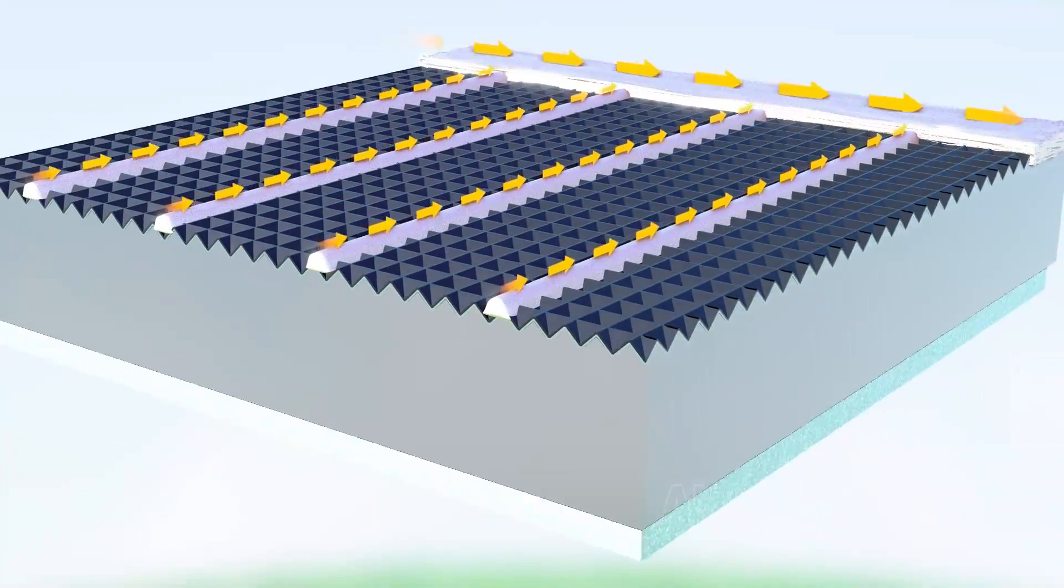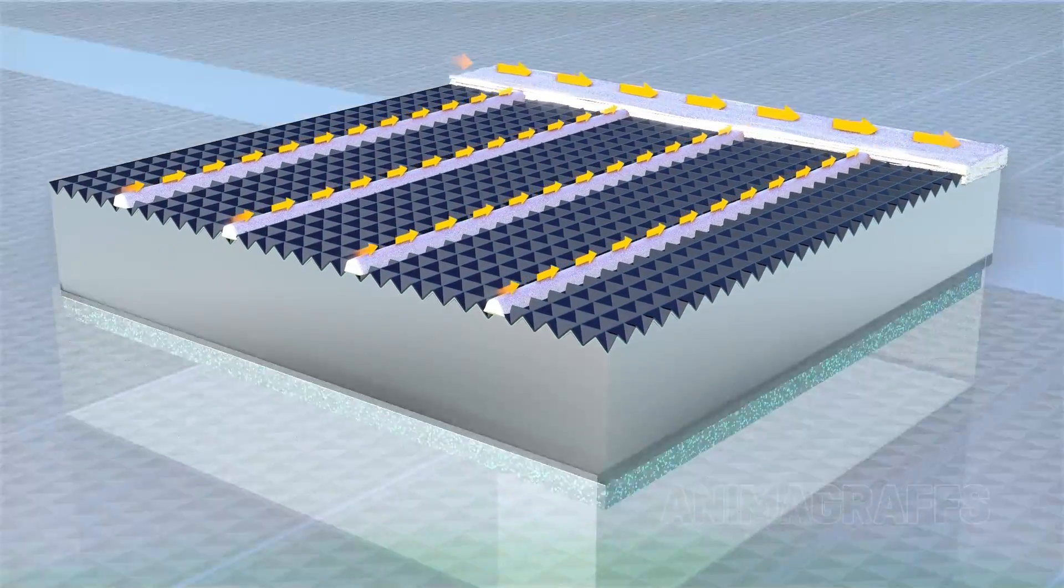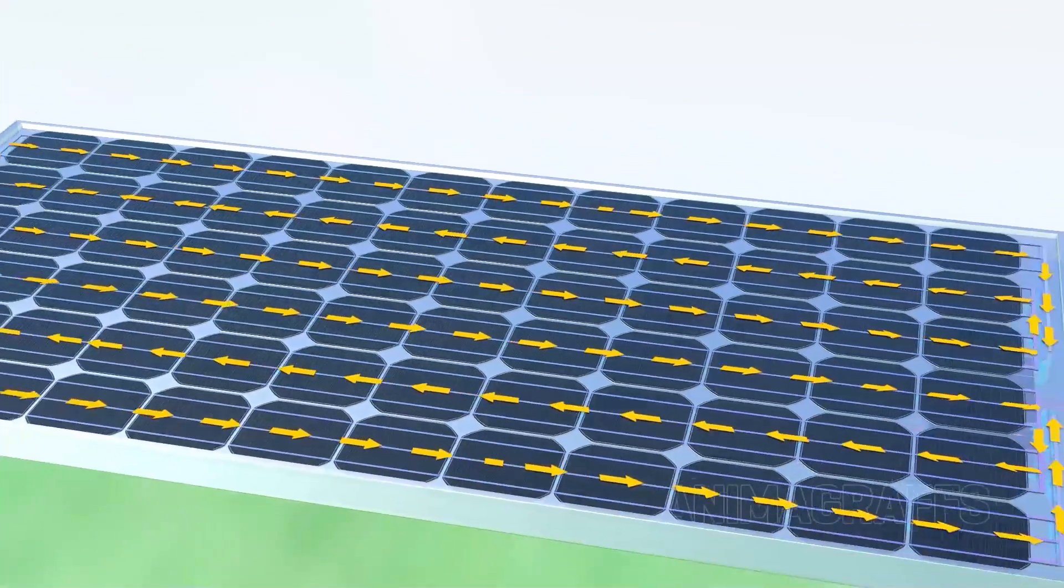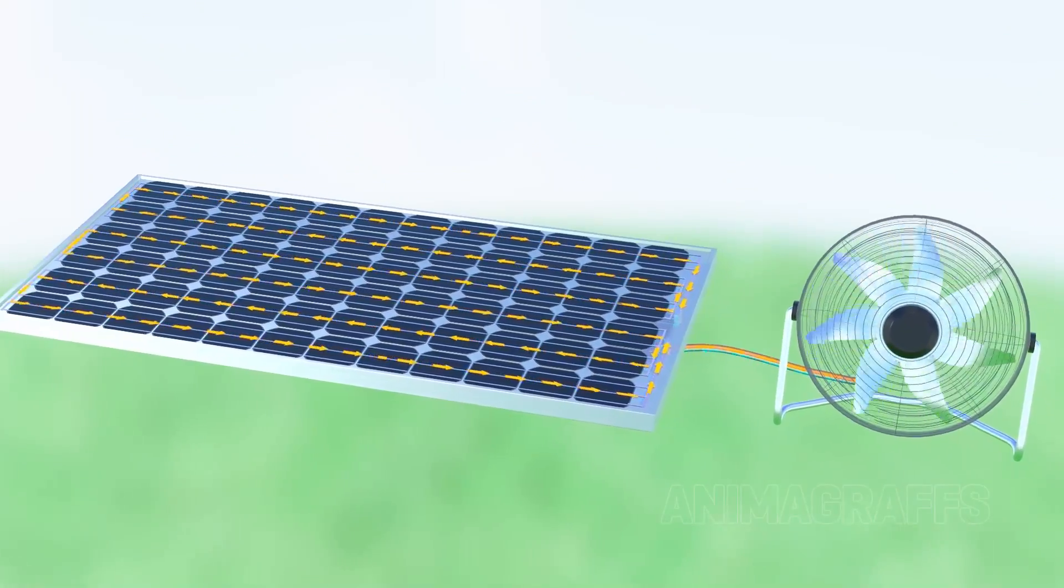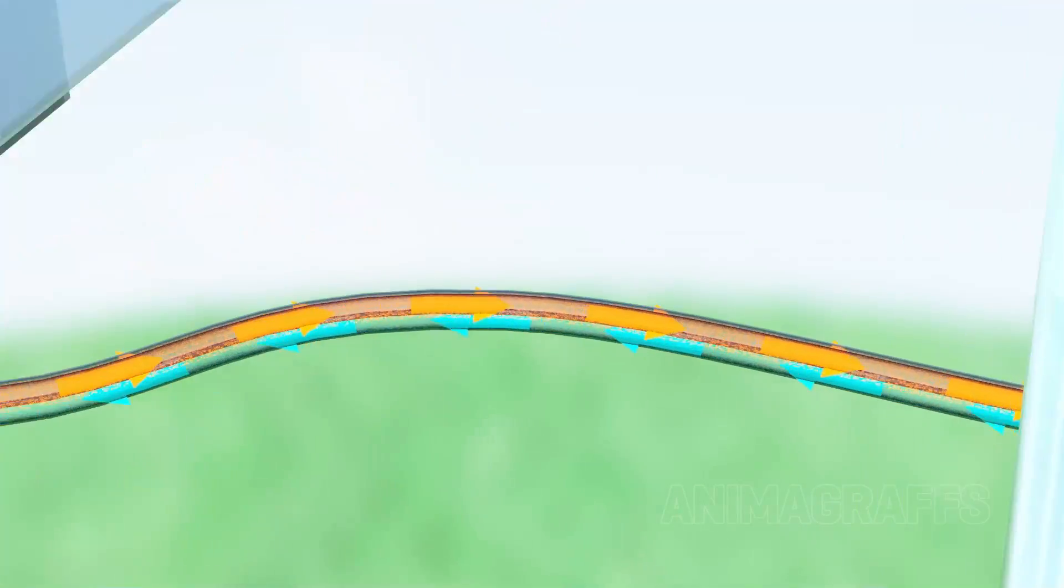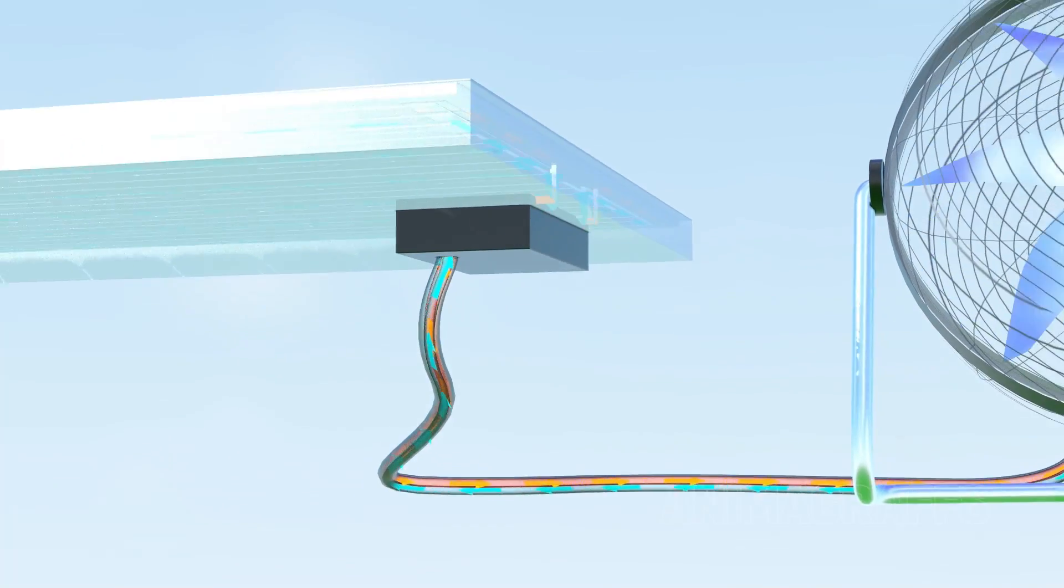Excited electrons travel out of the cell and through an external circuit where they exchange this newly gained energy to do work. The spent electrons return to the cell, ready to absorb more photons.